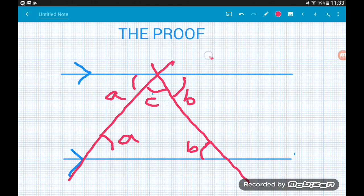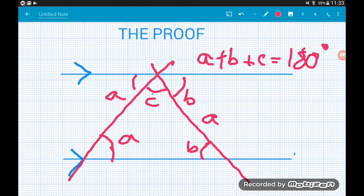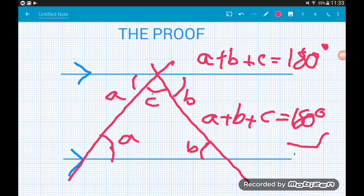Then we know by angles on a straight line, A plus B plus C equals 180 degrees. But if we check out what's going on inside our triangle here, we also have one of each angle. We have one angle A, one angle B, one angle C. Therefore the angles inside of our triangle, A plus B plus C, also equals 180 degrees. There's the proof. Cheers guys.